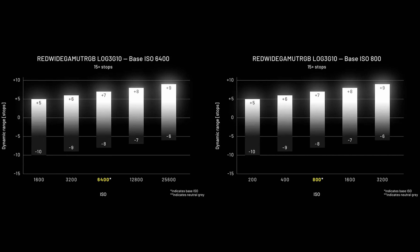Nikon released these charts showing where your dynamic range is sitting in regards to middle gray, and what happens to that when you change your ISO. 800 and 6400 are going to give you the sweet spot — middle gray right in the middle of your dynamic range. As you go up to 1600 or 3200 ISO, that middle gray point stays the same but your dynamic range starts to shift upwards. And as you lower it to 400 or 200, you see the exact opposite — it starts to move down toward the shadows.